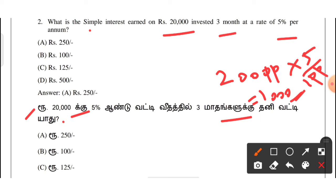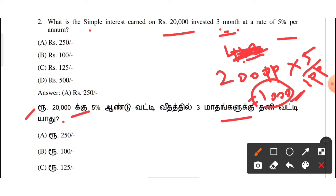3 months later, we divide by 3 to get the interest for 3 months. So the answer option is 250.